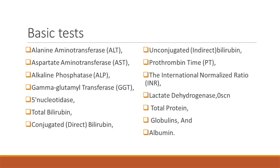The basic tests that we run day to day for LFT are alanine aminotransferase ALT, which we also call SGPT; aspartate aminotransferase AST, which we also know as SGOT; alkaline phosphatase; gamma-glutamyl transferase or transpeptidase which is GGTP; 5-nucleotidase; total bilirubin; conjugated or direct bilirubin; unconjugated or indirect bilirubin; prothrombin time; the international normalized ratio that is INR; LDH; total protein; globulin; and albumin.